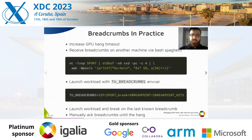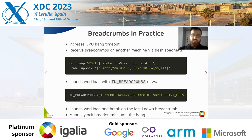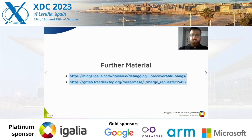Here is how it looks in practice for Turnip. First we increase the GPU hang timeout, as breadcrumbs could easily trip it. On another machine we receive the breadcrumbs via a nice script. Then we set where the breadcrumbs would be sent over the network and set the first breadcrumb to require explicit ack from TTY — kind of a breakpoint. We launch the workload and wait until the hang. Now that we have the last breadcrumb value, we reboot the testing machine and relaunch the workload with a breakpoint just before the last breadcrumb, then manually advance breadcrumbs until we have a hang. Links to the blog post and merge request are available for anyone interested.